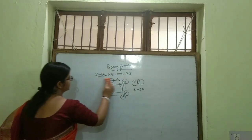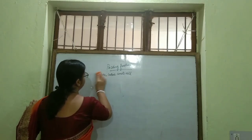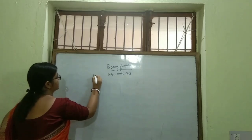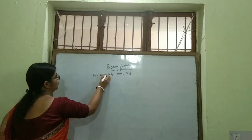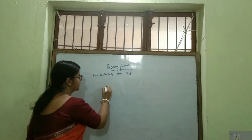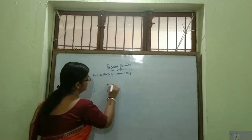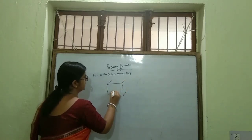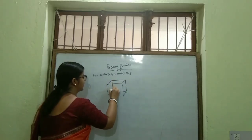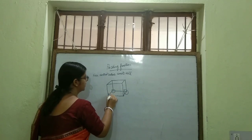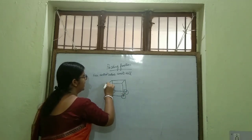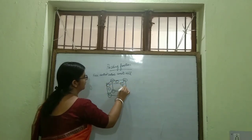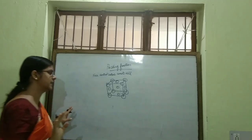Next, we will discuss the Face Centered Cubic unit cell. We all know that in a Face Centered Cubic unit cell, the particles are present at the corners and at the face center.